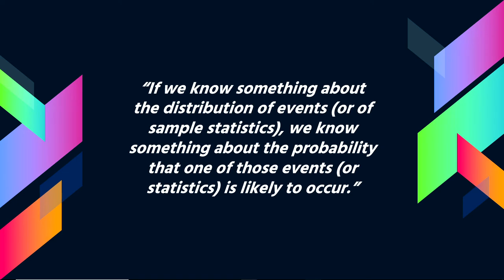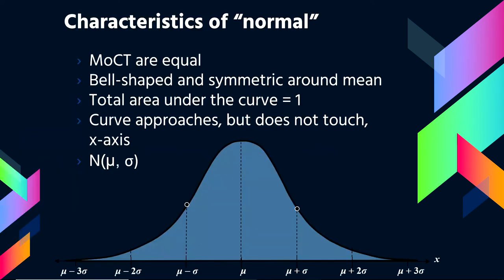When we focus on normal distributions, I want you to understand that this is foundational to the inference process—distributions are key. For a normal distribution, the first thing to realize is that all the measures of central tendency are equal.